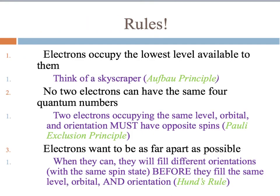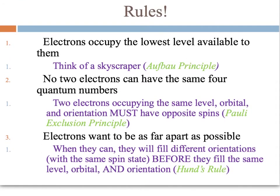This leads us to the rules of writing an electron configuration. The first rule: electrons will always occupy the lowest energy level available. I think of this like a skyscraper — when building a 50-story apartment building, you can't start at the top. You have to start at the bottom and build level by level. It's the same with electron configurations: always fill the lowest energy levels, then the next lowest, then the next. This is called the Aufbau Principle — named not for a person, but for a German word meaning to construct or to build.